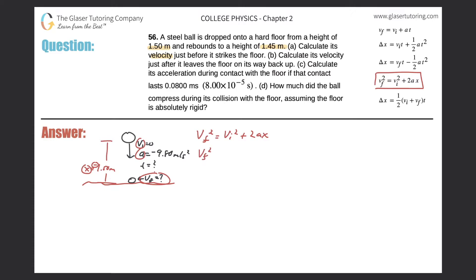So final velocity squared equals the initial velocity — which is zero — squared, plus two times the acceleration, which is negative 9.80, multiplied by the displacement, which is negative 1.50. Let's plug that into the calculator: two times negative 9.8 times negative 1.5. We get a value of 29.4. Then we take the square root to get rid of the square, so the final velocity equals plus or minus the square root of 29.4, giving us 5.42 meters per second.